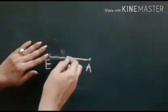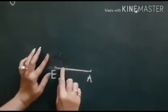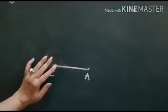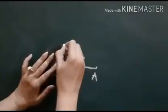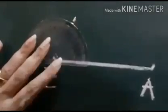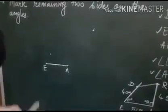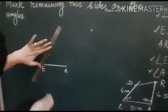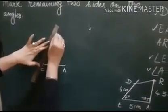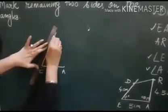At E we will draw an angle of 60 degree with the help of protractor. Place it like this and see where is your 60 degree. This is your 60, if you can see this is your angle at E, 60 degree. Extend it, join it with the scale and extend it further. This is 60 degree angle drawn.